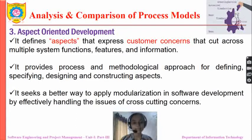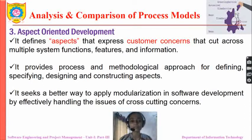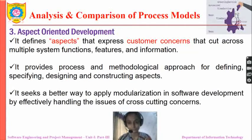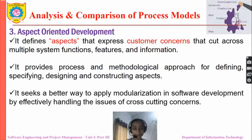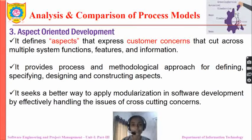The third specialized process model is aspect-oriented development. It defines aspects that express customer concerns that cut across multiple system functions, features, and information. It provides a process and methodological approach for defining, specifying, designing, and constructing aspects. It seeks a better way to apply modularization in software development by effectively handling the issues of cross-cutting concerns.